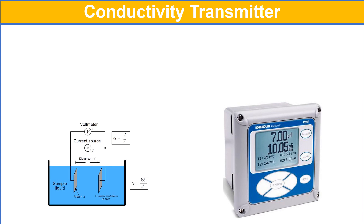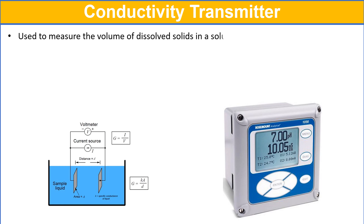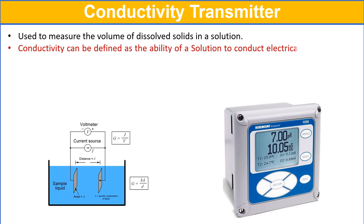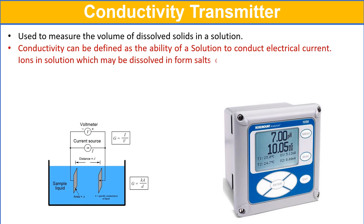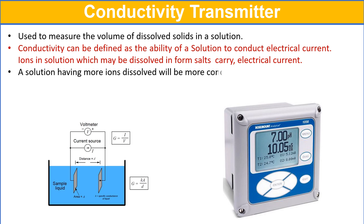The conductivity transmitter is used to measure the volume of dissolved solids in a solution. Conductivity is defined as the ability of a solution to conduct electrical current. The ions in solution, which may be dissolved in the form of salts, carry the electrical current. A solution having more dissolved ions will be more conductive.